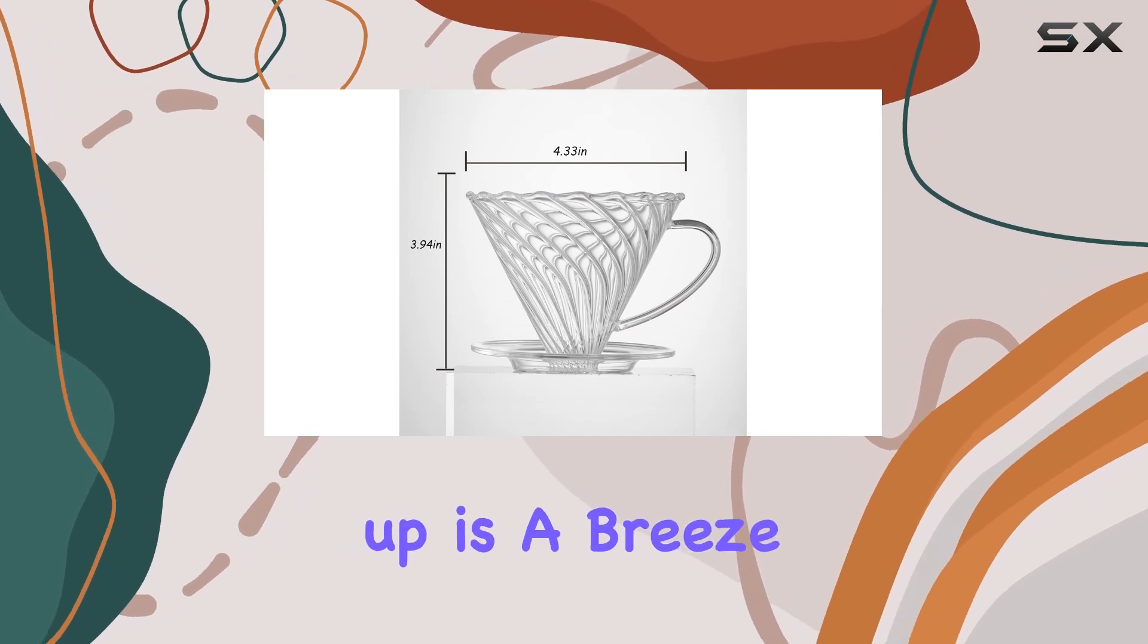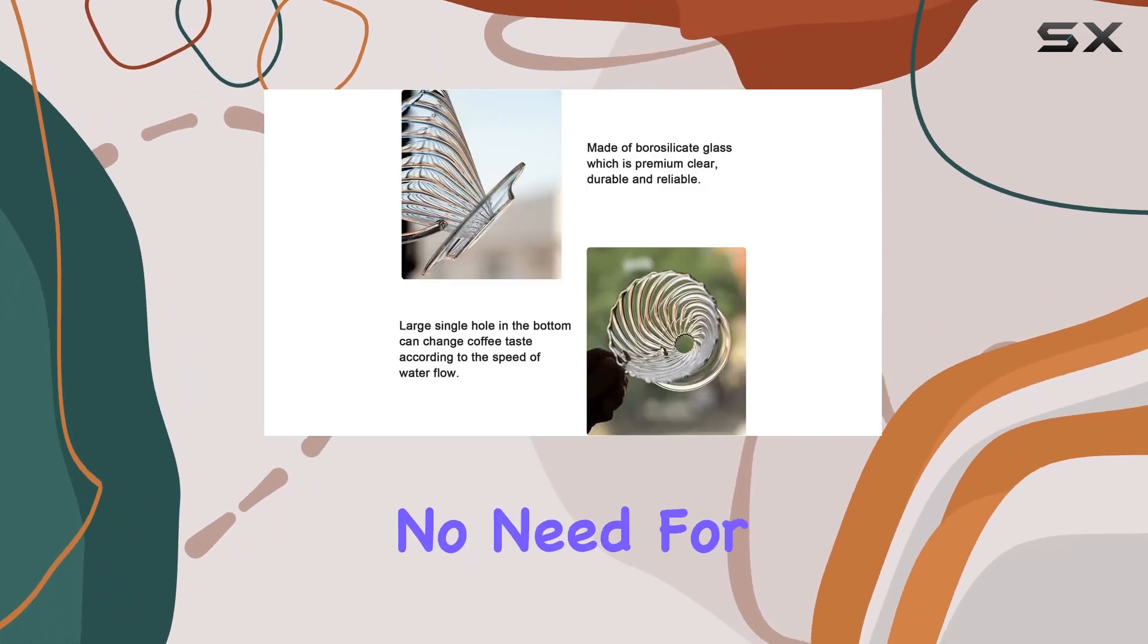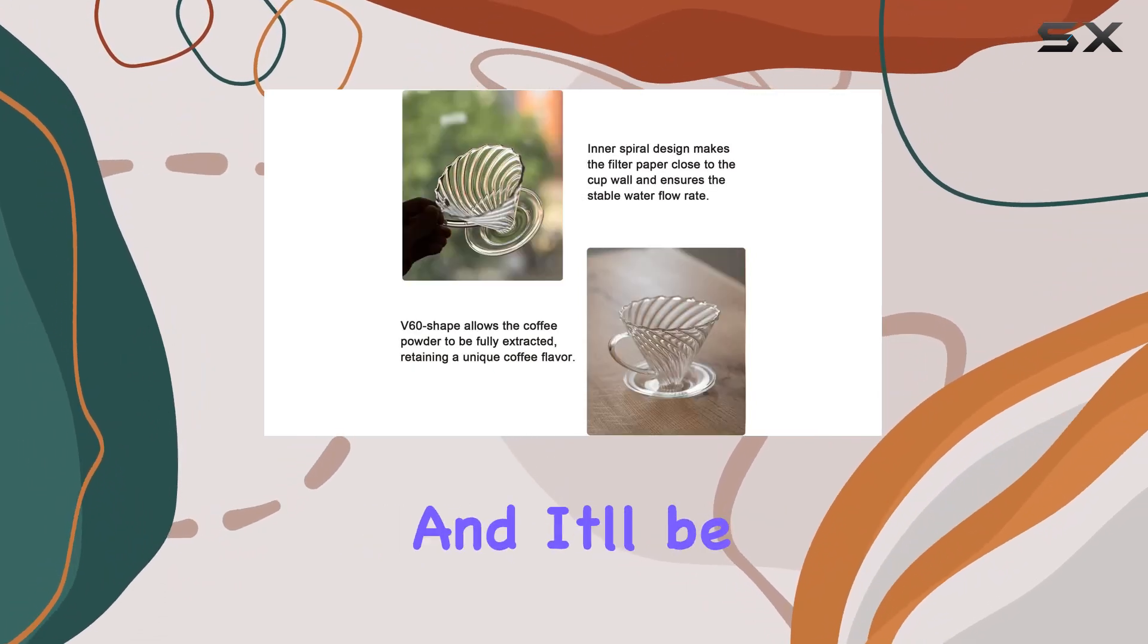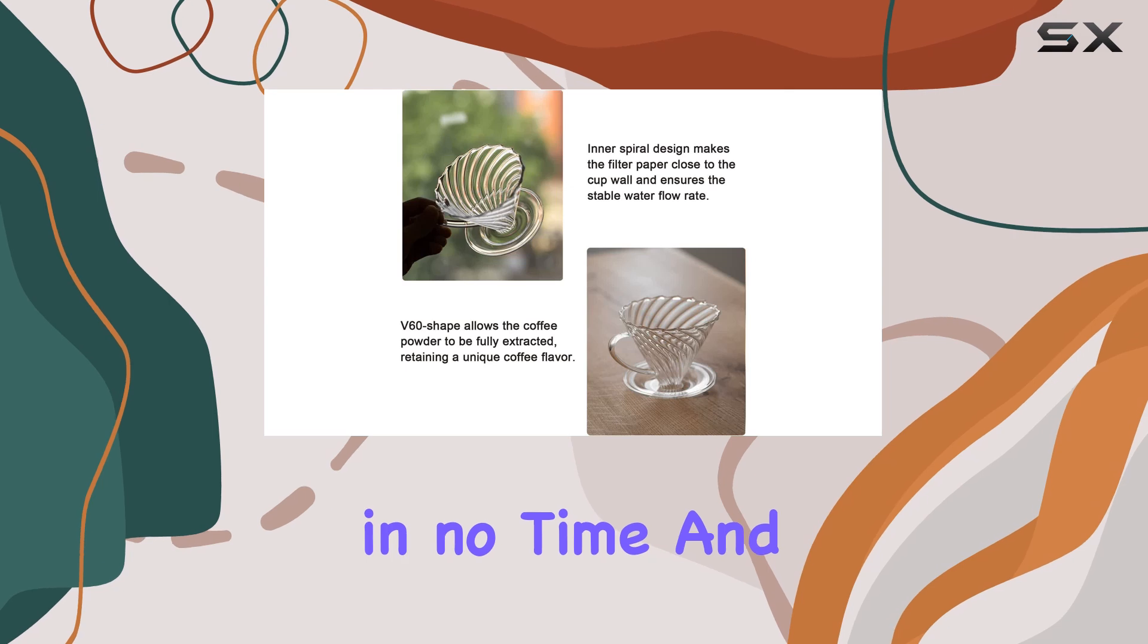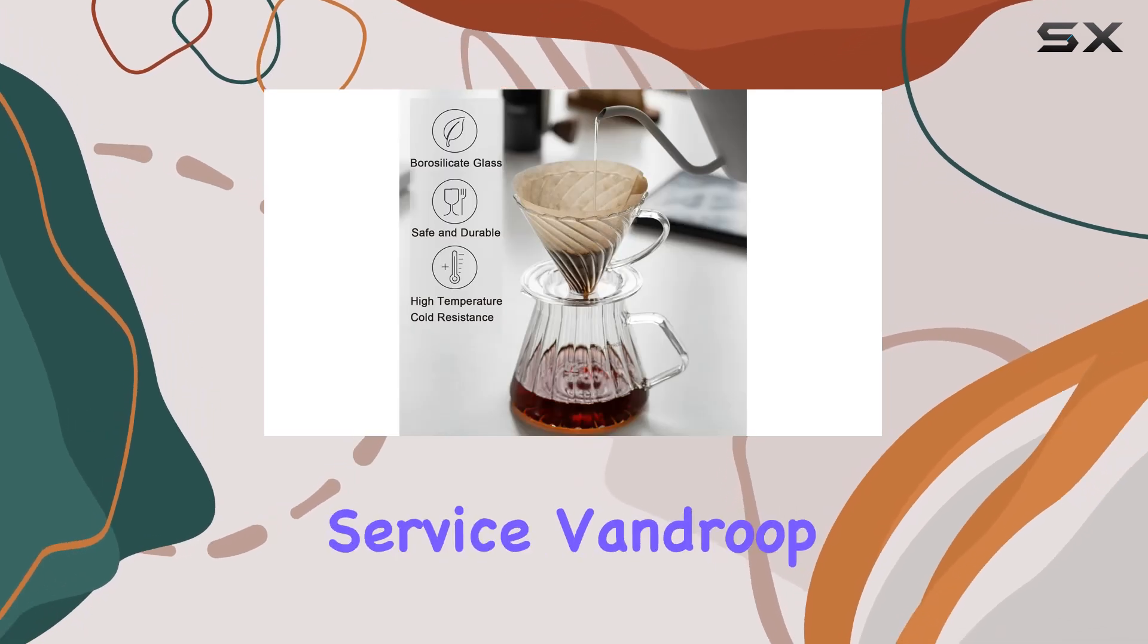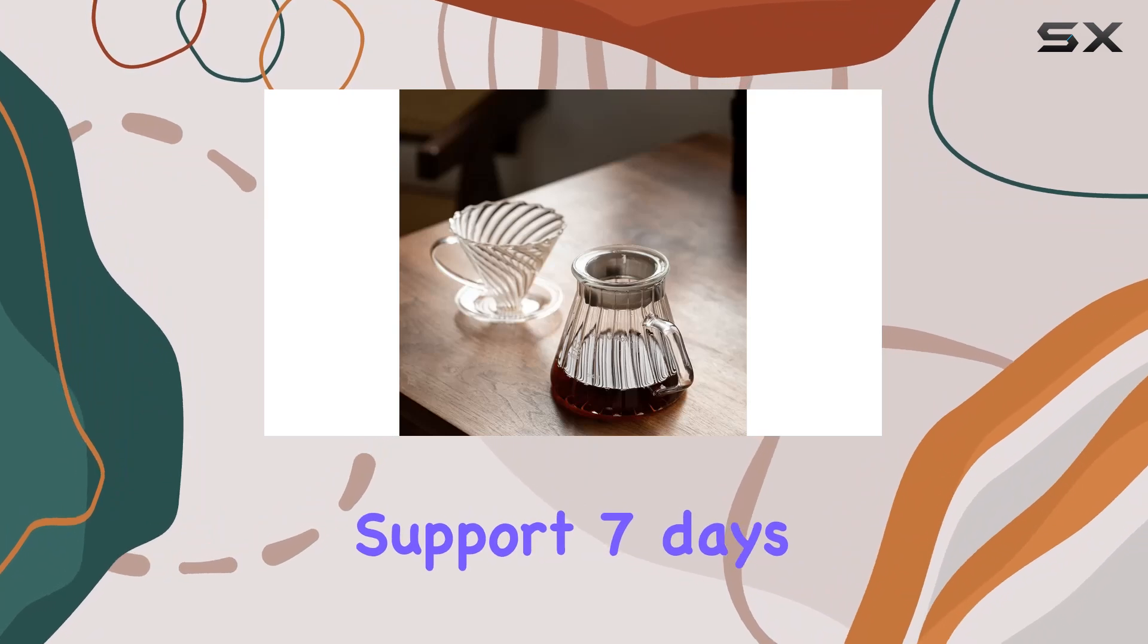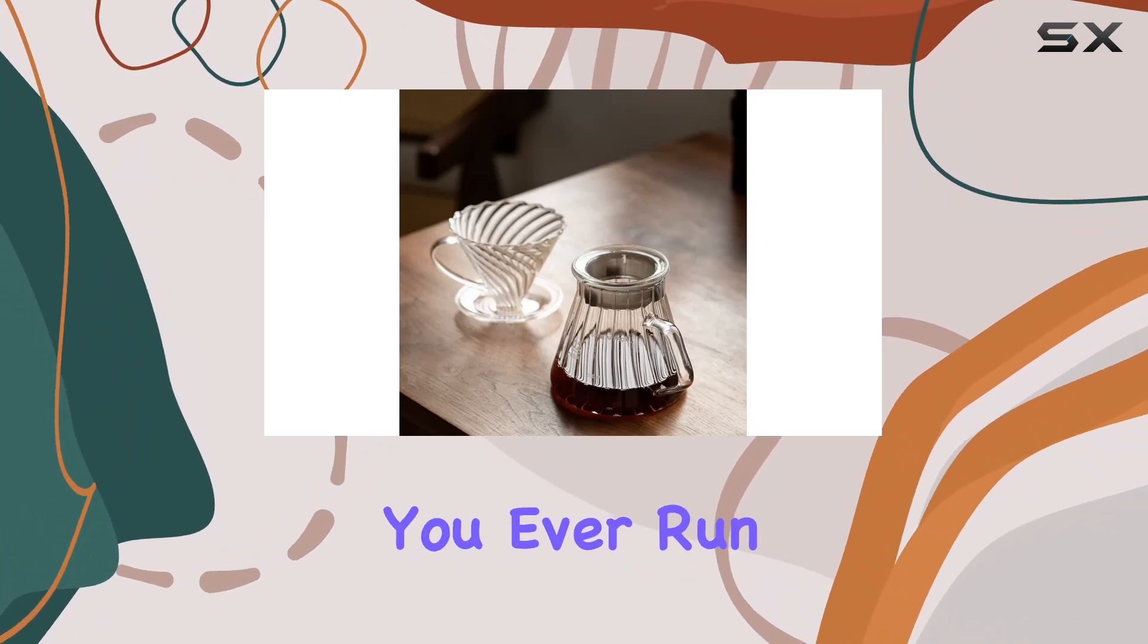Cleaning up is a breeze with this dripper—no need for a special brush. Simply dump out the grounds and rinse with flowing water, and it'll be sparkling clean in no time. And let's not forget about customer service. Vandrup stands by their products, offering support seven days a week, so if you ever run into any issues, they've got your back.